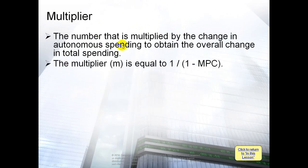The multiplier is the number multiplied by the change in autonomous spending to obtain the overall change in total spending. Total spending equals consumption C plus investment I plus government purchases G. This is the Keynesian model — we neglect net exports. So total expenditure TE equals C plus I plus G.